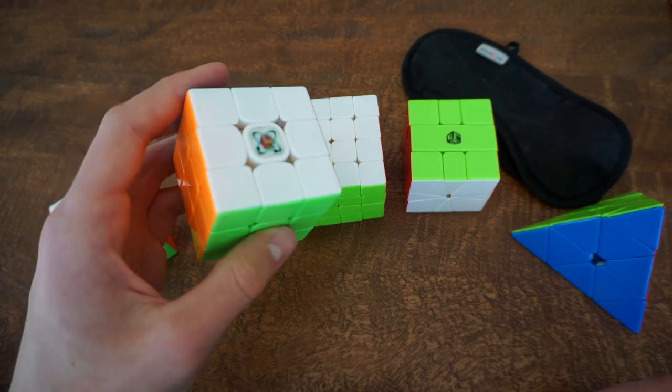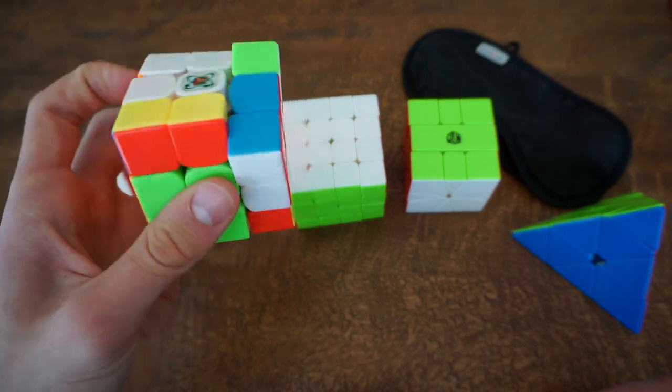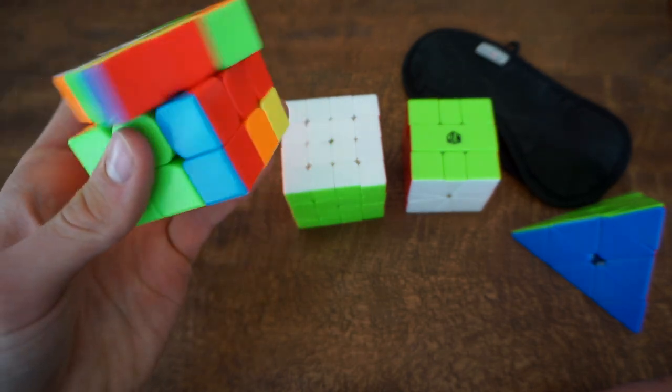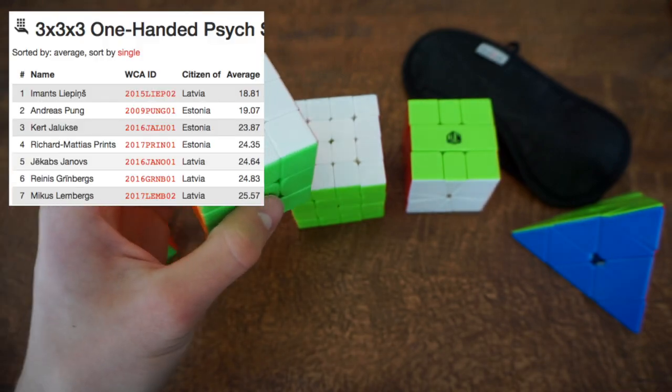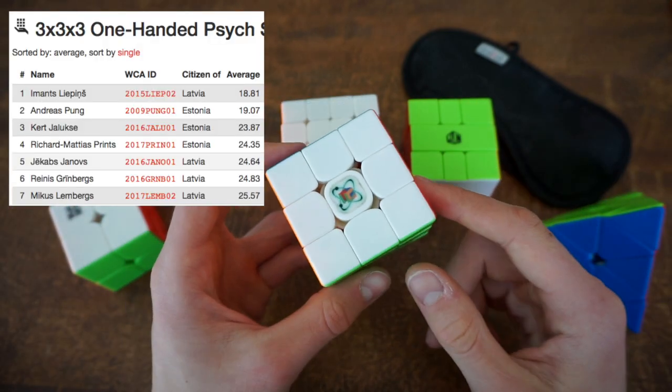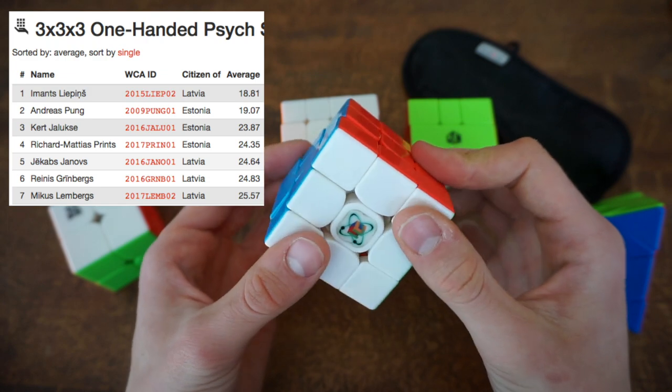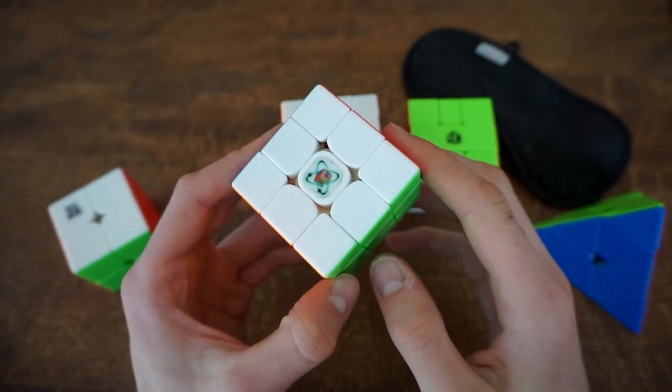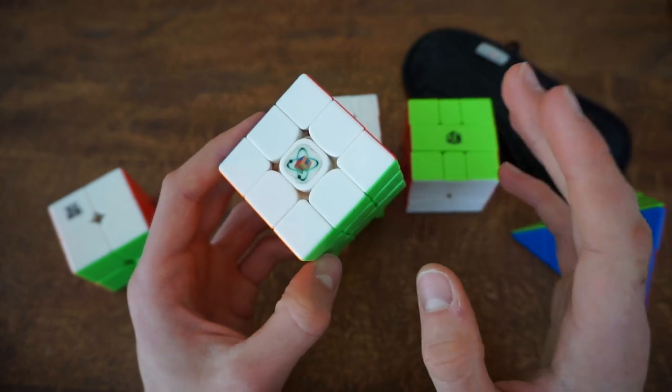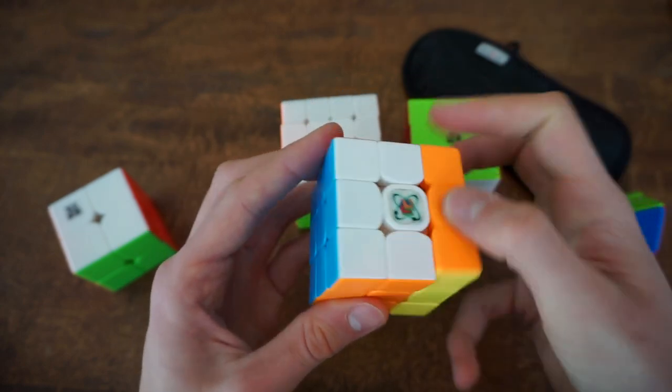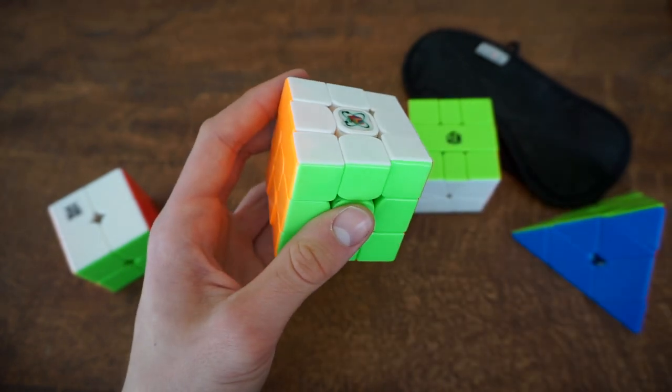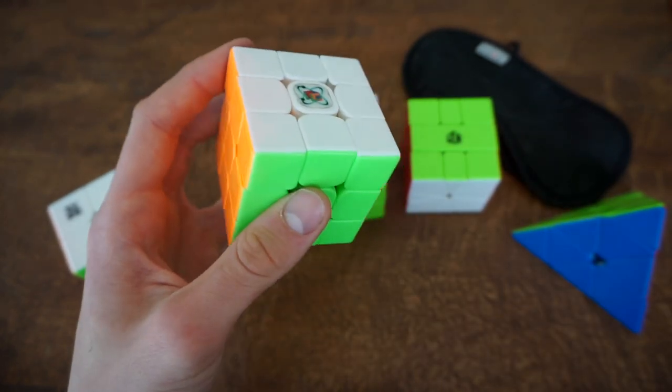And the last event is 3x3 one-handed and my goal is to get a... Also there is going to be quite a competition between the competitors because there are like four people who are fighting for the third slash second place. We'll see how things turn out but my goal is to get around 22 seconds average. That should be quite nice.